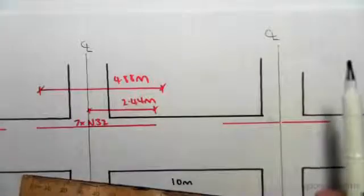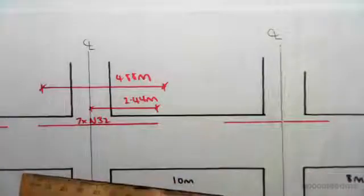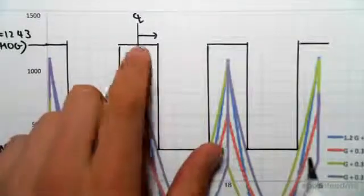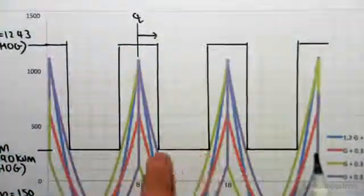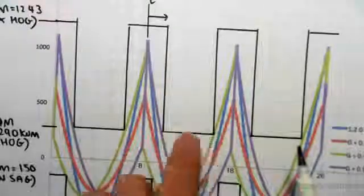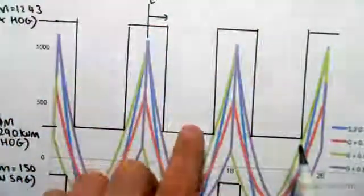If we look at our moment envelope, we've now found bars for this, this, and this. We now need to be looking at bars through here. This is going through mid span now, so these are at the support and this is at mid span.